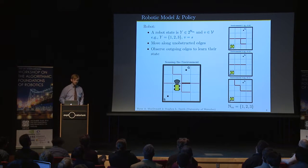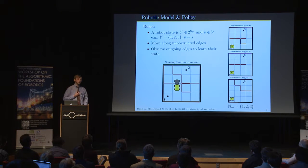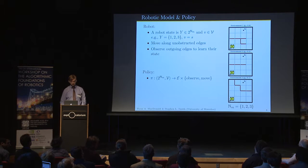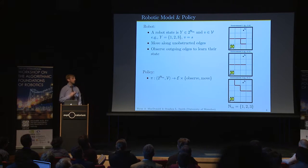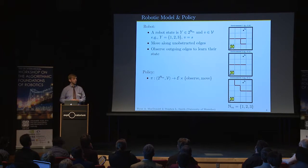We allow the robot to update its belief by observing an outgoing edge from its current position. It pays the observation cost and is returned the state of that edge. I'll go into more detail on belief updates in a few slides, but first I'd like to talk about a policy. A policy maps a belief and position to an outgoing edge and an indication of whether the robot should move or observe that edge.